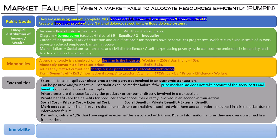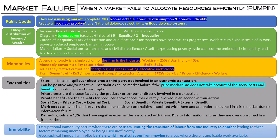Lastly, immobility. See if you can recall the two types of immobility and define each. Hopefully you've remembered geographical and occupational immobility. Occupational immobility refers to barriers limiting the transition of labour from one industry to another. Geographical immobility implies barriers which restrict labour from moving. Occupational mobility is an issue the UK is trying to solve by getting people more skills, social mobility, and qualifications so they can react to changes in the labour market. Geographical mobility is improved by things such as transport and reducing the cost of living in particular areas.